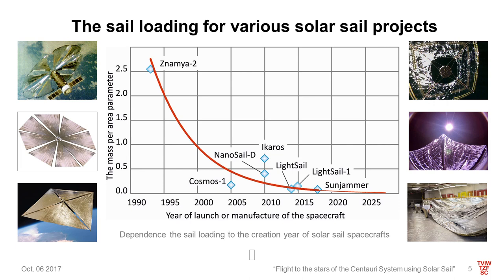The figure shows the variation of the sail loading for real solar sail projects depending on the year of their development. This figure combines the data obtained in surveys of solar sail technology. You can see the decrease of the mass per area parameter from the first Soviet solar sail to the modern solar sails.